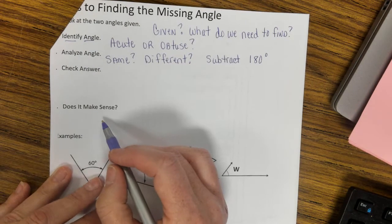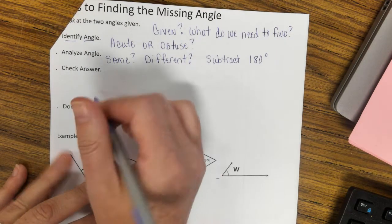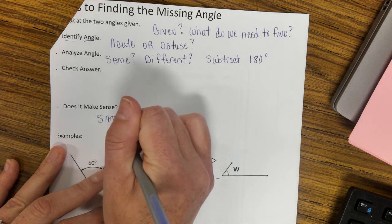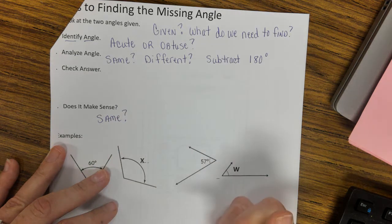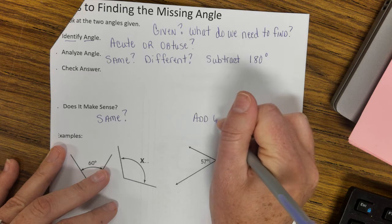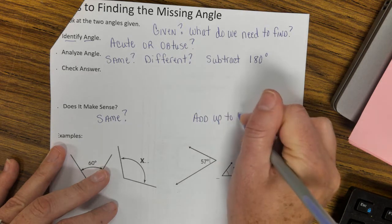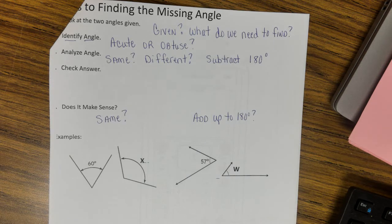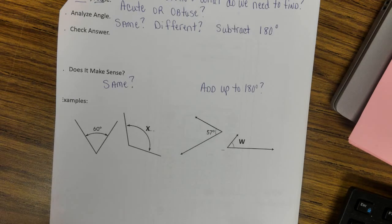Then we're going to check our answer and ask ourselves does it make sense. Does it make sense that our angles are the same, or does it make sense that our angles add up to 180 degrees? Because in eighth grade we basically look at 180 degrees.